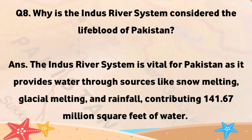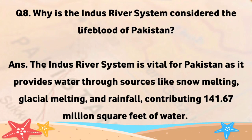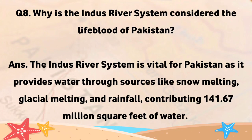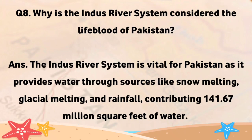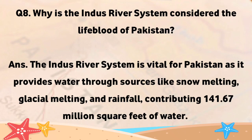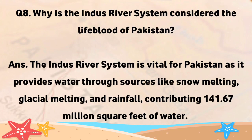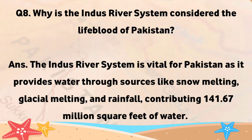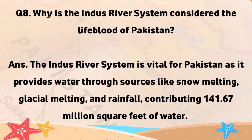The Indus River system is considered the lifeblood of Pakistan. It is vital for Pakistan as it provides water through sources like snow melting, glacial melting, and rainfall, contributing 141.67 million square feet of water.